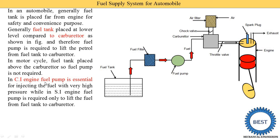In a CI engine — compression ignition engine or diesel engine — a fuel pump is essential. In an SI engine the fuel pump is not compulsory; it depends on the location of the fuel tank. But in a CI engine the fuel pump is compulsory because it is used to inject the fuel with very high pressure. In a CI engine, a spark plug is not provided because combustion occurs due to the high pressure and temperature of the compressed air. Instead of a spark plug, a fuel injector is provided and it sprays diesel inside the engine. That is why the fuel pump is compulsory in CI engines.